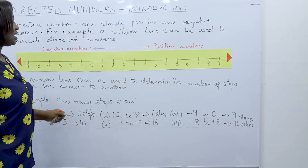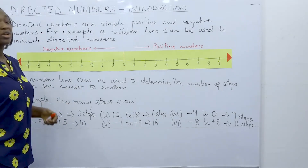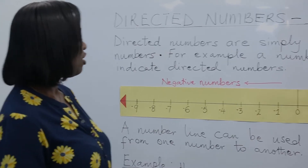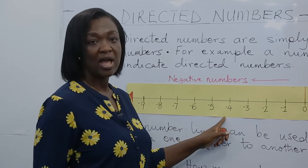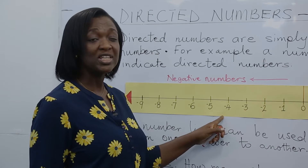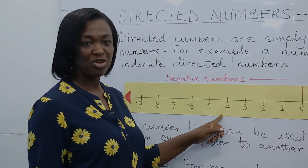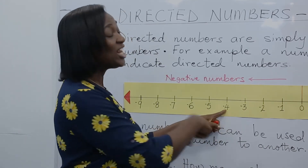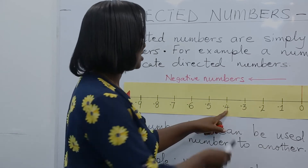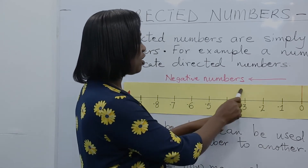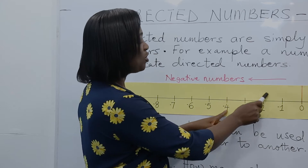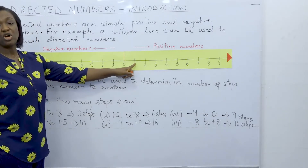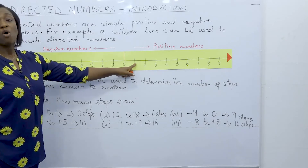This is very easy, and it can also be used to look at temperatures. For example, if the temperature of a room is minus four and the temperature increases by five, what is the new temperature? From minus four it increases by five steps: one, two, three, four, five. The new temperature will be positive one.